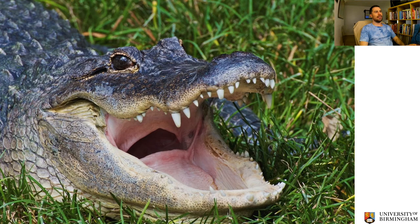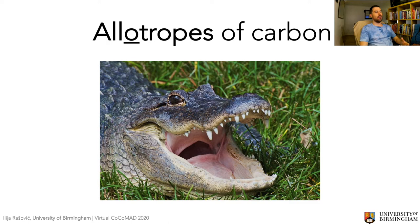Why am I going to talk about alligators? I'm not, but this is quite a nice way to remember a very useful word in science — and that is allotropes. Allotropes are different structural forms of the same element. Carbon is unique in having an absolutely huge range of different structural forms, and we're going to cover just a few of those — this kind of menagerie, this zoo of carbon structures — to hopefully show you how exciting this actually is.